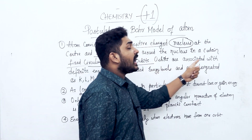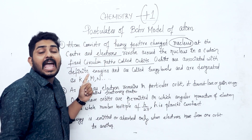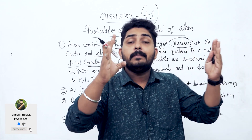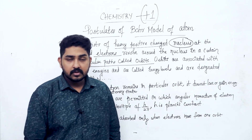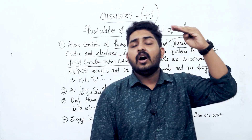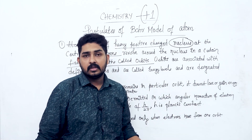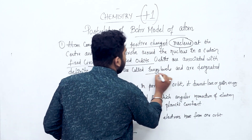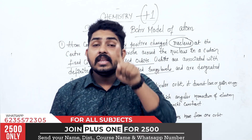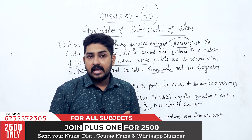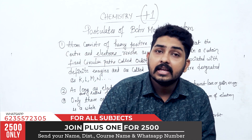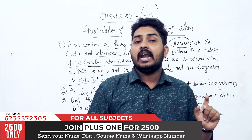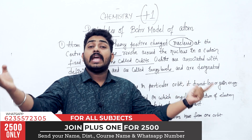Orbits are associated with definite energies and are called energy levels. One orbit has a particular energy, so orbits are also called energy levels. These energy levels are designated as K-shell, L-shell, M-shell, and N-shell.